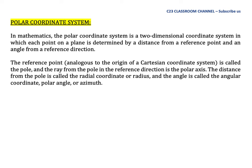The reference point, analogous to the origin of Cartesian coordinate system, is called the pole, and the ray from the pole in the reference direction is the polar axis. The distance from the pole is called the radial coordinate or radius, and the angle is called the angular coordinate, polar angle, or azimuth.